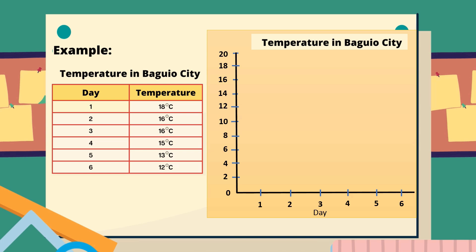Next, plot the points. For day one, we have 18 degrees Celsius; day two, 16 degrees Celsius; day three, 16 degrees Celsius; day four, 15 degrees Celsius; day five, 13 degrees Celsius; and day six, 12 degrees Celsius. Lastly, join each point with the successive points using a ruler. Here is the line graph of the daily temperatures for Baguio City.